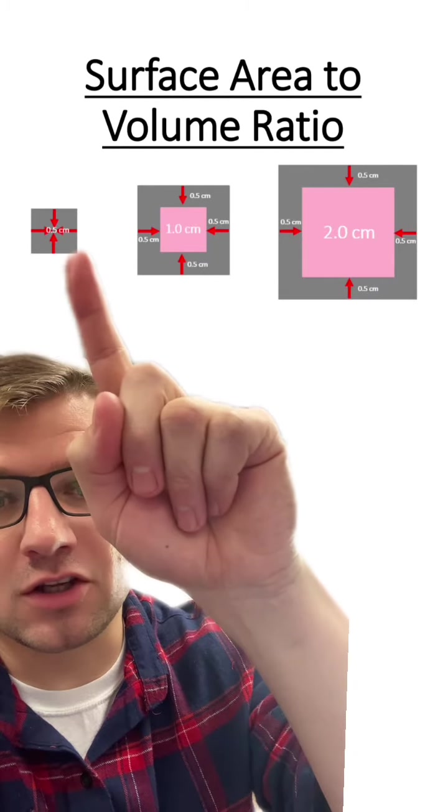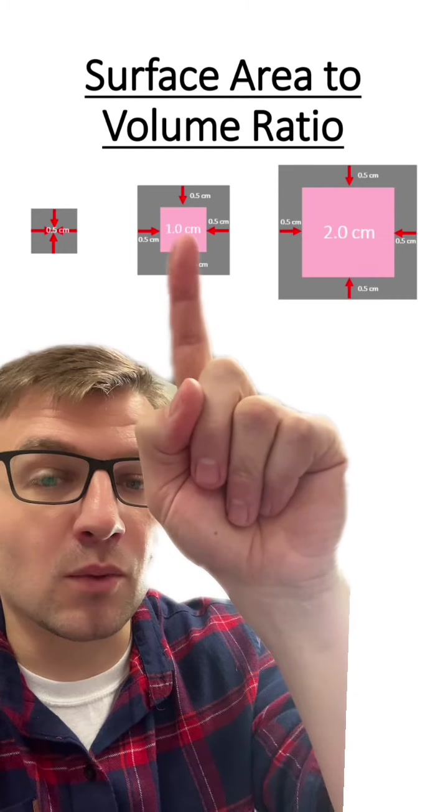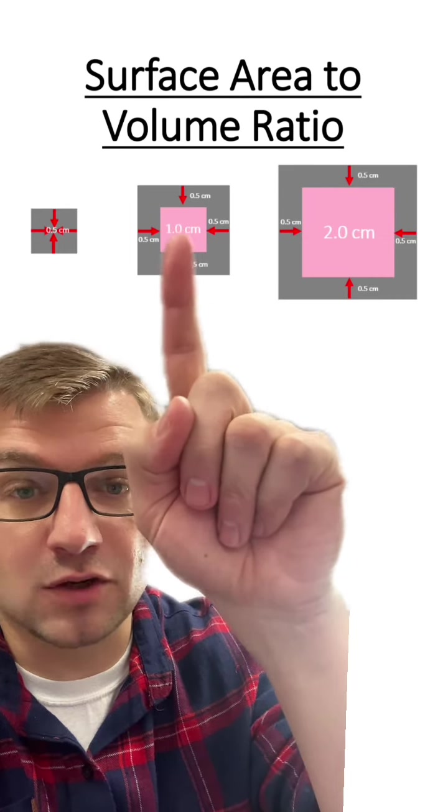So for the 1 centimeter cube, it's all diffused. For the 2 centimeter cube, you have a 1x1x1 cube inside that's non-diffused or undiffused.